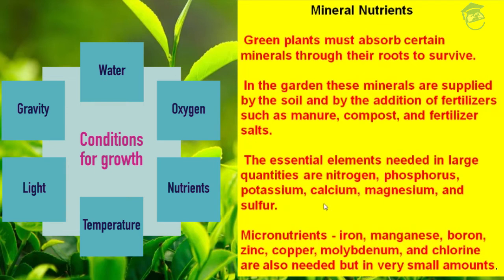The primary nutrients are nitrogen, phosphorus, and potassium — these are macronutrients, specifically primary nutrients which are most required by plants. Calcium, magnesium, and sulfur are also macronutrients, but they are classified as secondary nutrients. Then come micronutrients: copper, manganese, iron, boron, molybdenum, and chlorine. These are also needed but in very small amounts, which is why they are called micronutrients — also known as trace nutrients or trace elements.